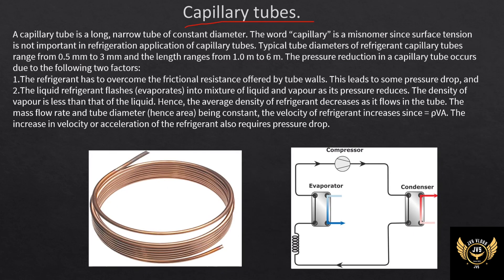Next we have capillary tubes. Capillary tubes are long copper tubes — about 6 meters long with a small diameter of approximately 0.5 to 3 mm. High pressure refrigerant enters the capillary tube. Because it is a long path, the tube creates resistance, which causes pressure reduction.